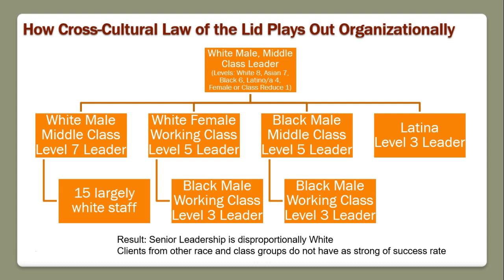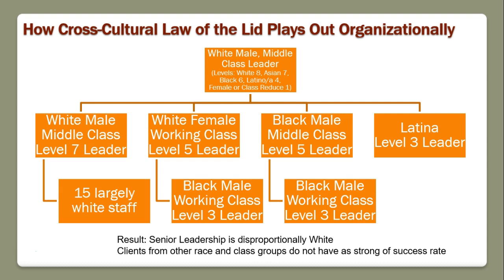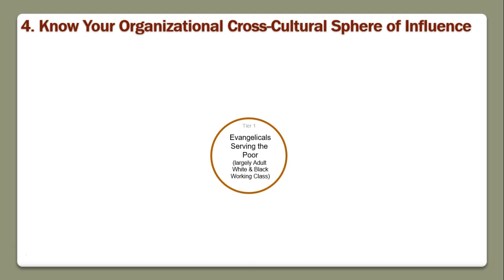Your personal sphere of influence can create an organizational cross-cultural sphere of influence. City Vision University was founded out of the Association of Gospel Rescue Missions. It started off only serving evangelicals serving the poor — largely adult, white, and black working class. That's the tier one, and that's honestly the group that we still serve the best. We're trying to serve others better, but that is the group that we serve the best.